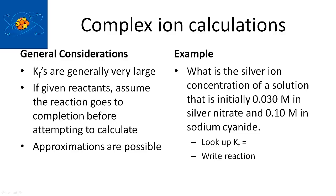Here's a typical problem: What's the silver ion concentration of a solution that's initially 0.03 molar in silver nitrate and 0.1 molar in sodium cyanide? So how do you know what product is formed?